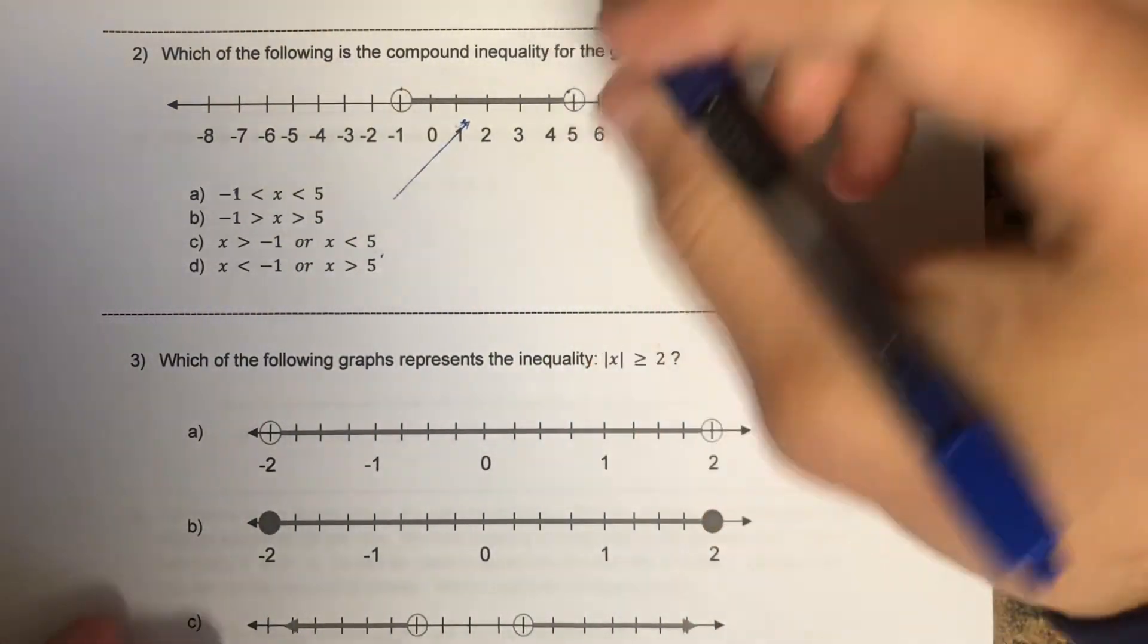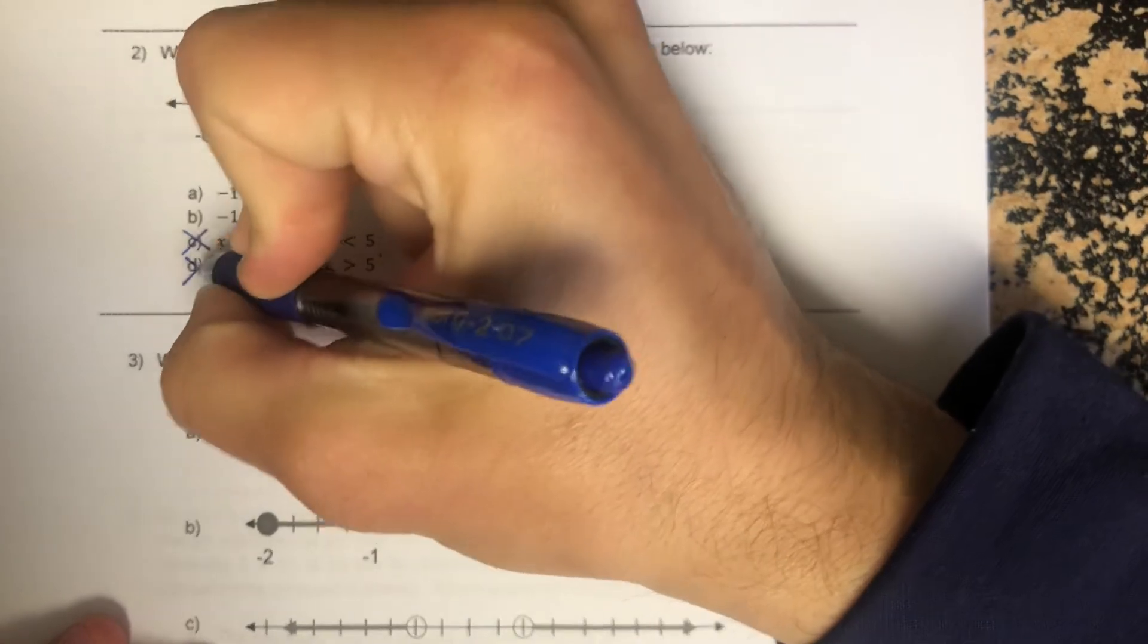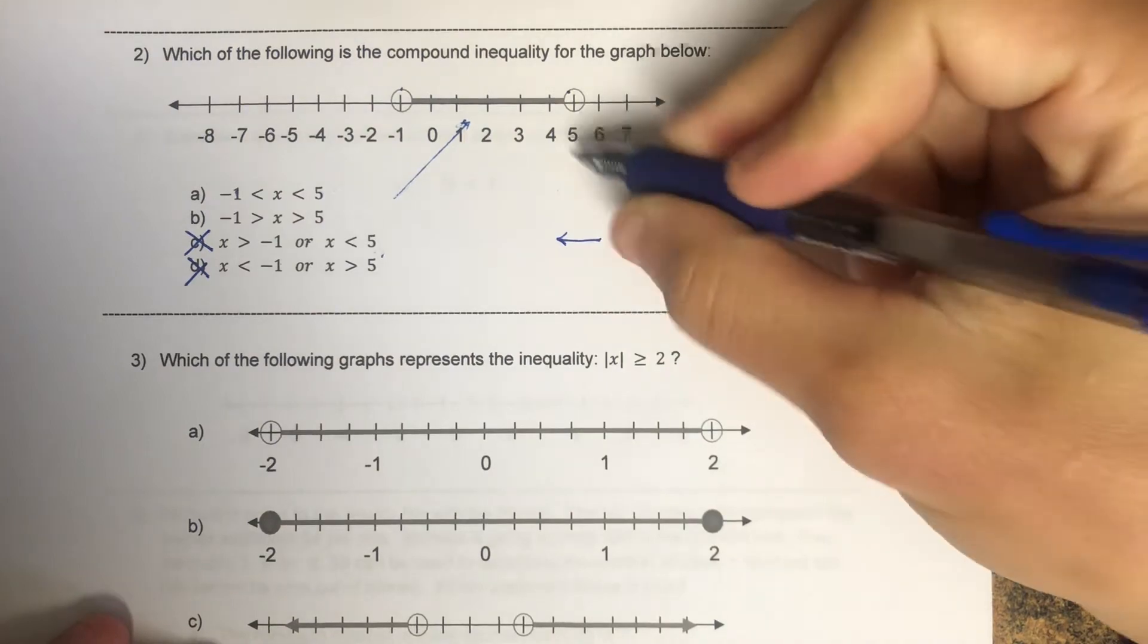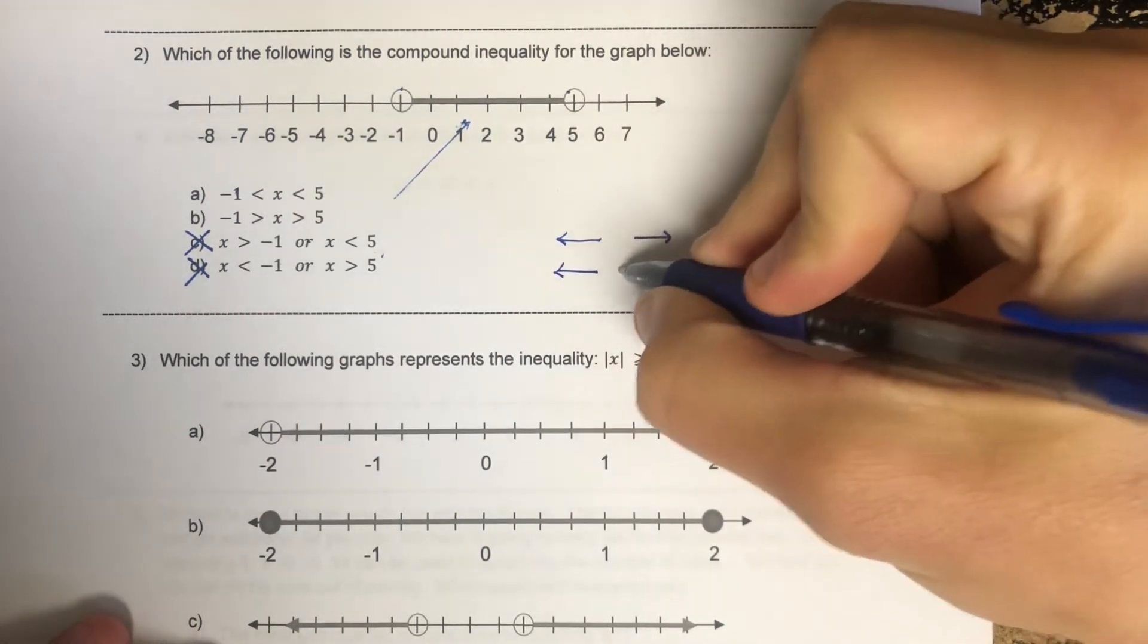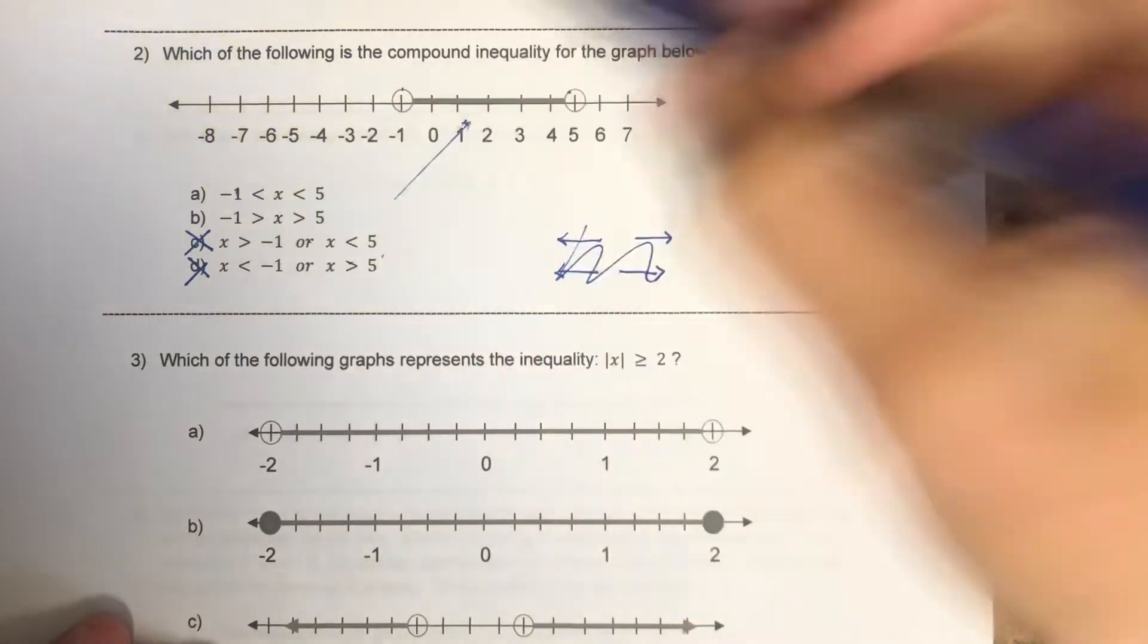You would know though if it was an 'or' question because they would have arrows at least one 99% of the time too. So no arrows, it's got to be either A or B.